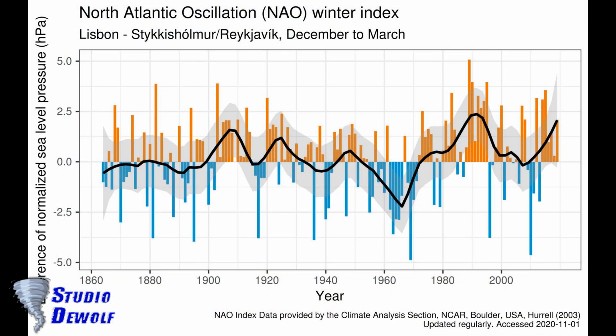The North Atlantic Oscillation gives an indication of the most likely pressure setup over the winter period. It gives strong clues about the likely type of weather during a winter. The difference in air pressure between the high-pressure area in the Azores and the low-pressure area in Iceland is expressed with the NAO index. A large difference in air pressure between the two areas results in a positive NAO index, and a small difference in a negative NAO index. For the low-pressure area near Iceland, measurements from a station near Reykjavik are used; for the southern high-pressure area, measurements at Lisbon are used.